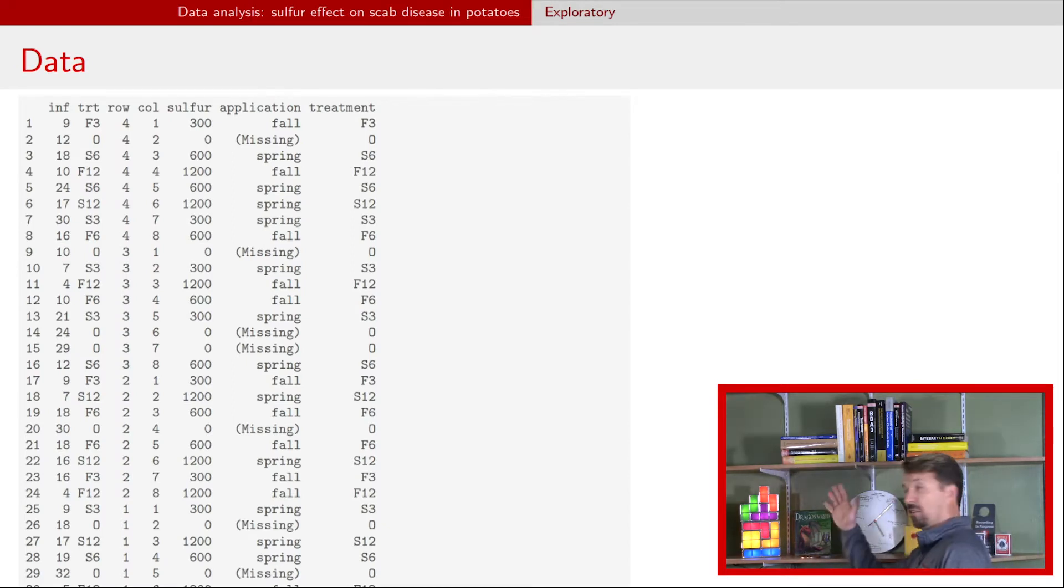Scratch that, here's the data. The only thing I really want to point out from this data is a couple of things. One that we have a row and column. So we'll see that in a second. But we also have a situation where the application timing fall and spring, you'll see some places where it says missing. And the reason it says missing is because when you add zero sulfur, then it doesn't really matter when you, whether you add zero in the fall or in the spring. And so that column really doesn't make any sense at all when no sulfur is added.